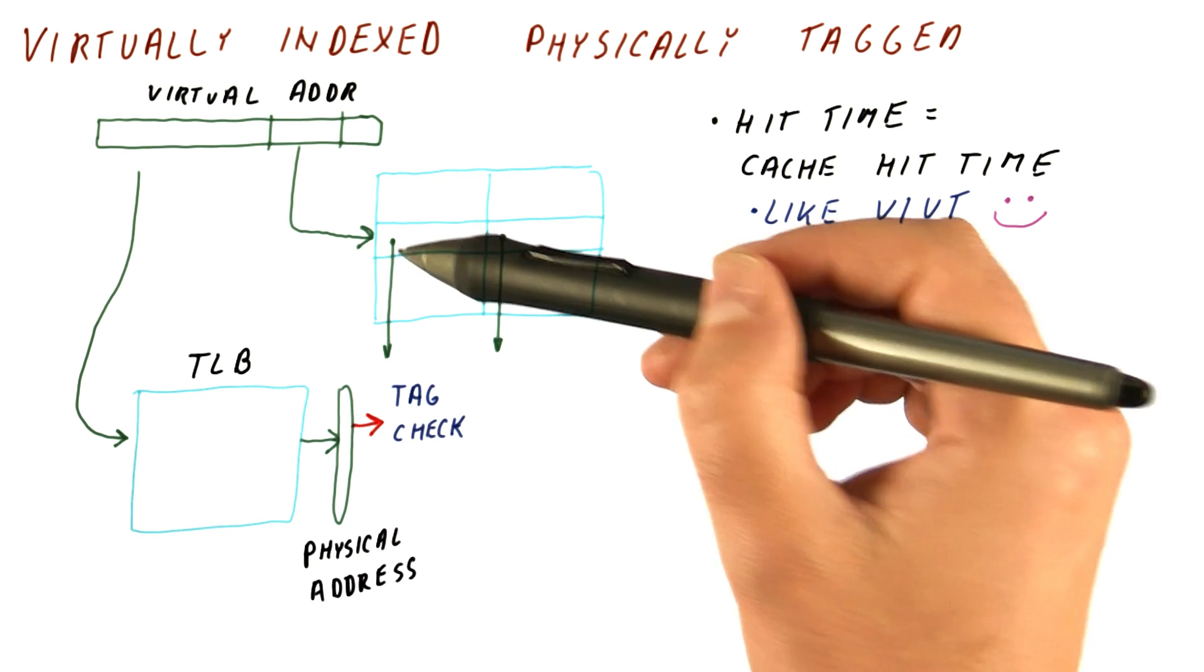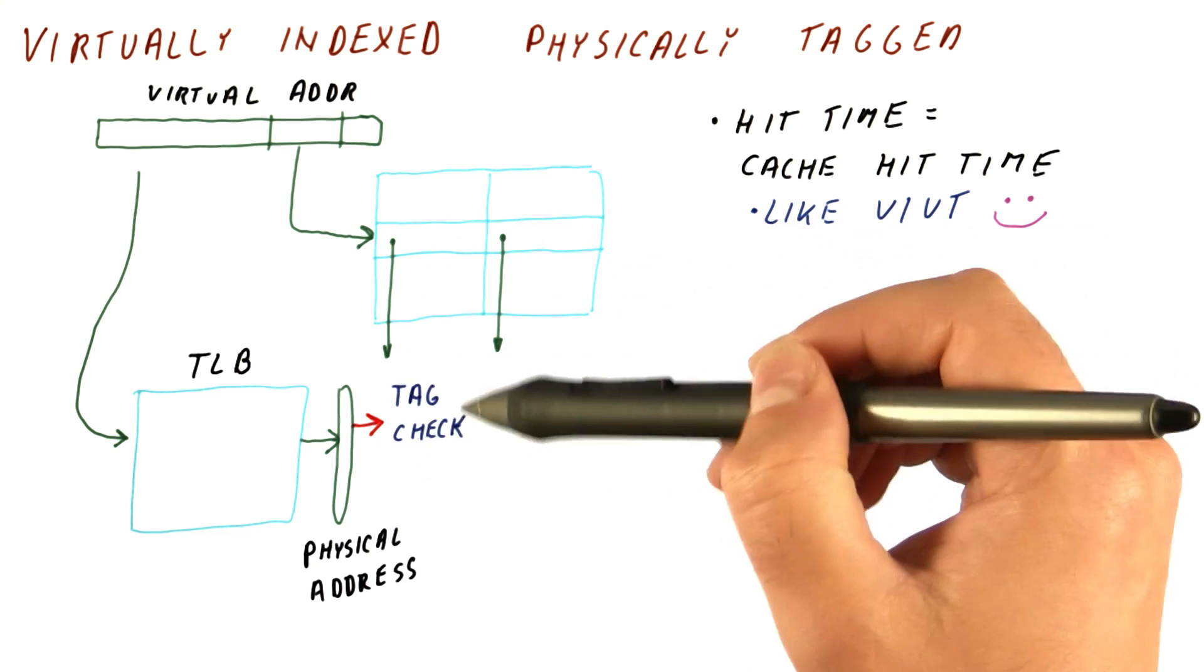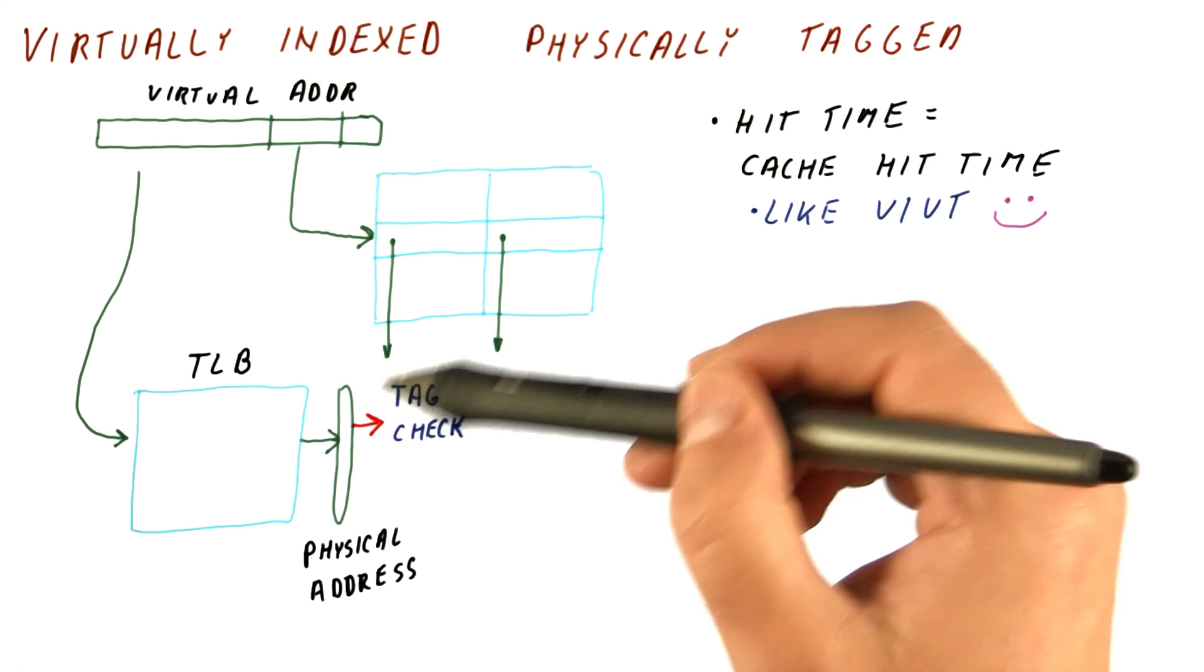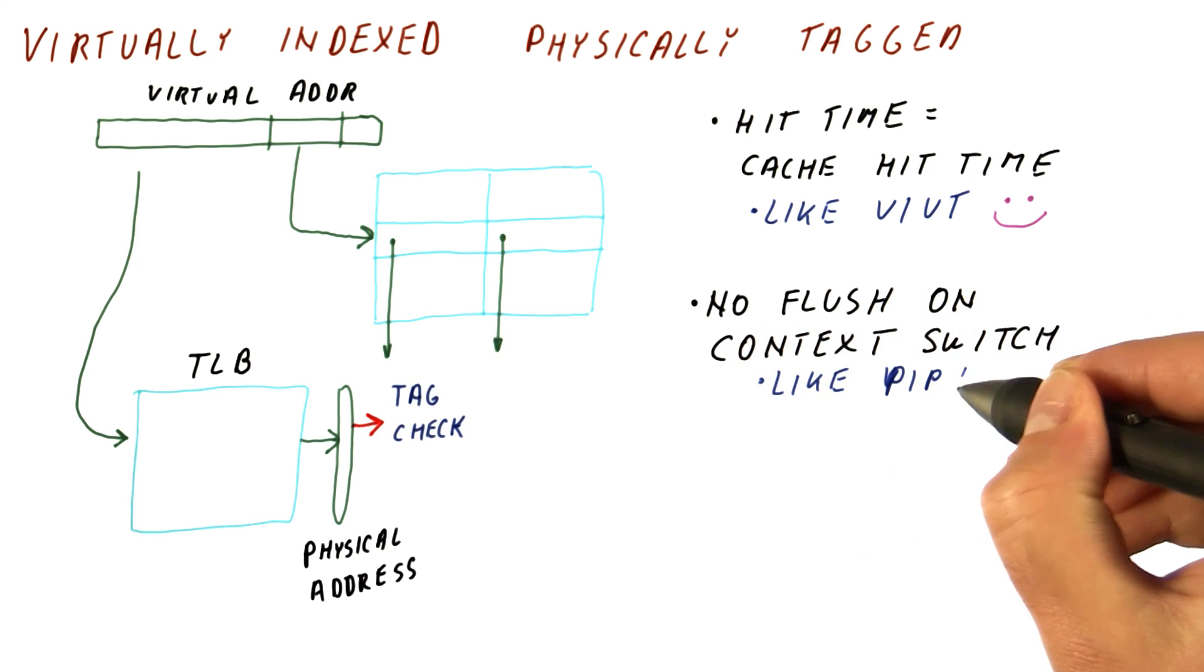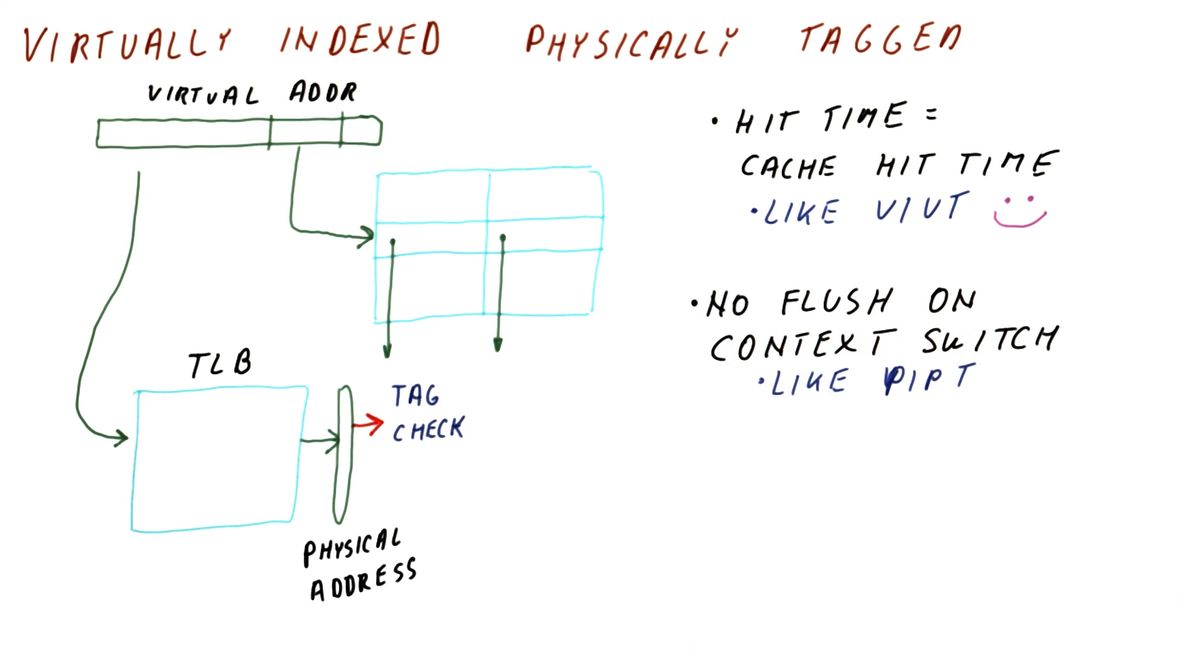So the virtual address in another process will map maybe to the same set. But once it maps there, the actual tag is not going to match, because these two have different tags. So this is like the physical cache, and it's nice.